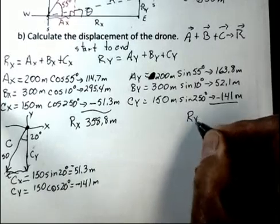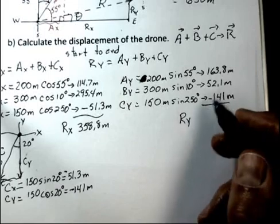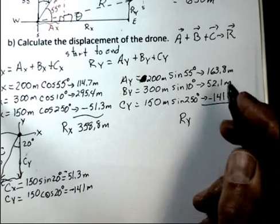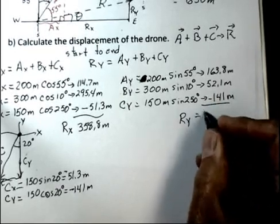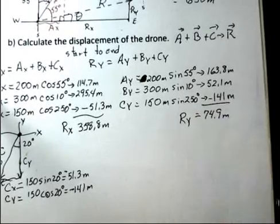For the y component, R sub y, we add up the values of Ay, By, and Cy. Again, there's a minus sign here. And I came up with 74.9 meters for the y result.